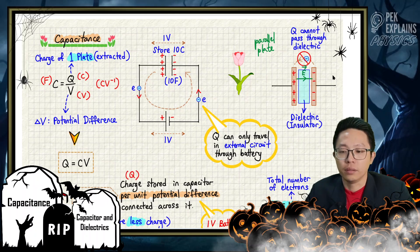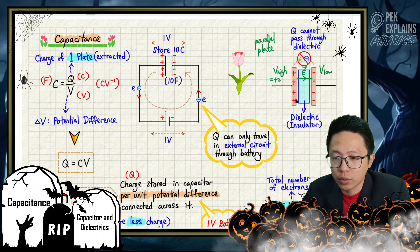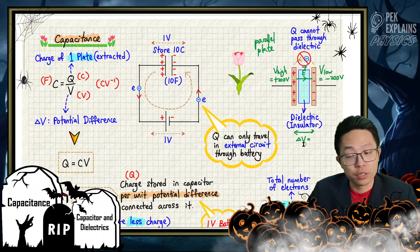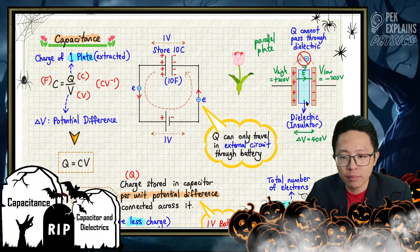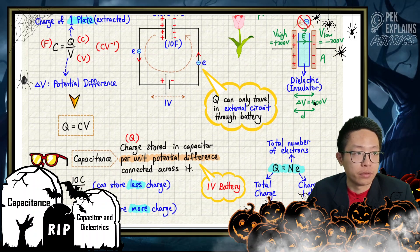In between the plates you have a uniform electric field. The positive plate has high potential — for example, positive 200 volts — and the negative plate has a low potential, for example negative 200 volts. In between them we have a potential difference delta V. For instance, high potential minus low potential gives 400 volts between the two plates. They also have a separation d and a certain cross-sectional area.